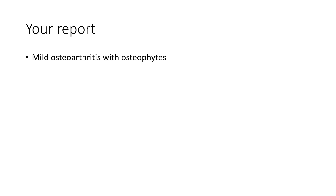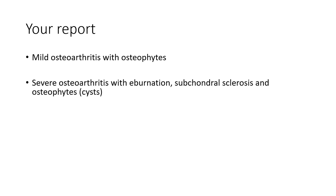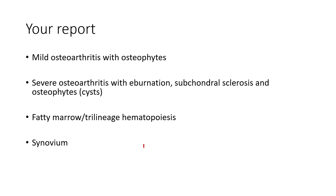This is what your report should read: either mild osteoarthritis with osteophytes — this is uncommon — but more commonly the joints you'll see will show severe osteoarthritis defined by the presence of eburnation with subchondral sclerosis and osteophytes. Do take a good look at the trilineage hematopoietic or fatty marrow within the cancellous bone. If you do see synovium, comment on it — often you'll see no abnormalities, but very occasionally you'll see things like granuloma. In joints such as the knee, you'll see fibrocartilage which is meniscus.